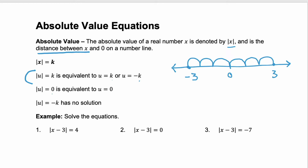If the absolute value is equal to 0, then u is equal to 0. It's saying that your distance traveled is 0. If you started at 0, and you traveled 0 distance, you're still at 0. The tricky one: the absolute value is equal to negative k — this has no solution. It's telling you you're traveling a negative distance. You can't travel a negative distance. You can only travel 0 or a positive distance. So, whenever you see an absolute value is equal to a negative, not possible.